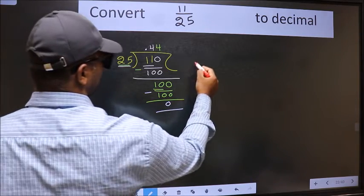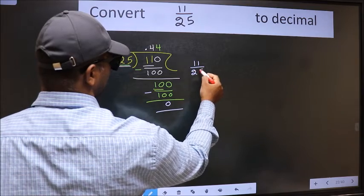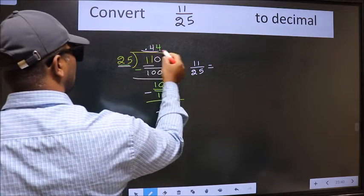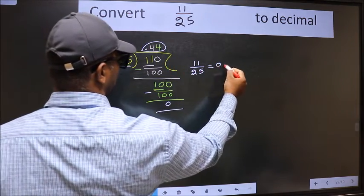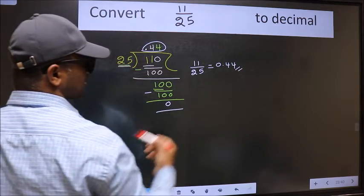Therefore, the decimal of 11 by 25 is this one. 0.44 is our answer.